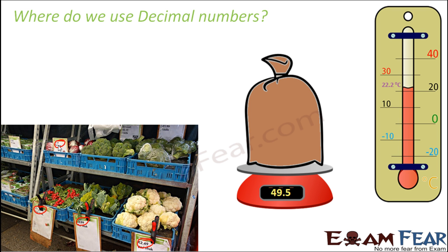Talk about temperature — you would have seen the temperature in weather forecast reports. It says today the temperature of this place is 22.2 degree Celsius, which is a decimal number. The normal temperature of our body is 98.3 degree Fahrenheit — again a decimal number. And when you look into your bank account summary, interest rates on different deposits appear as 9.1%, 5.5%, 7.2% and so on — all decimal numbers.